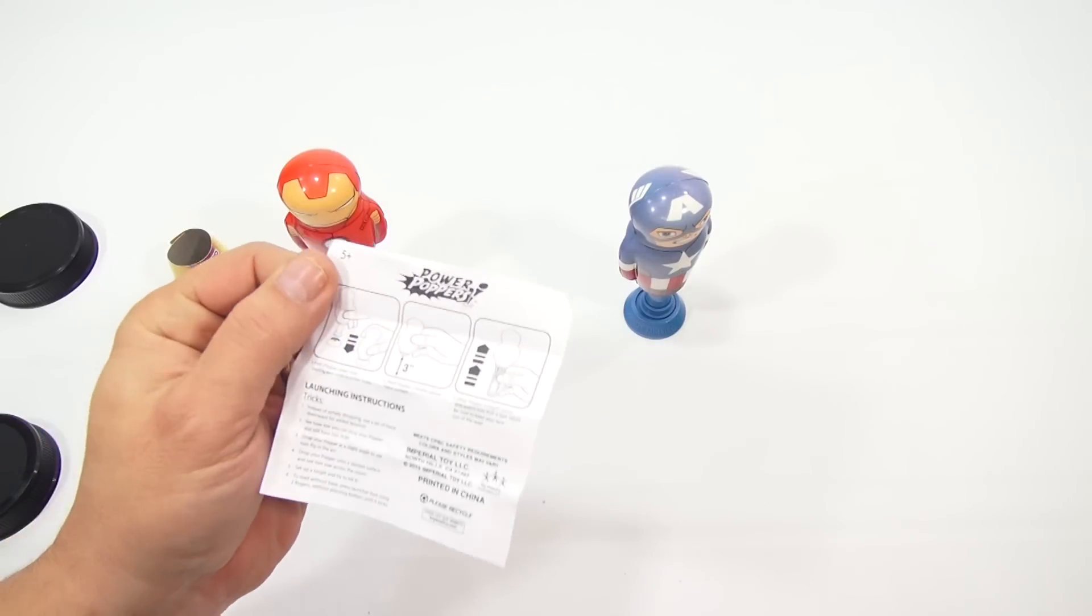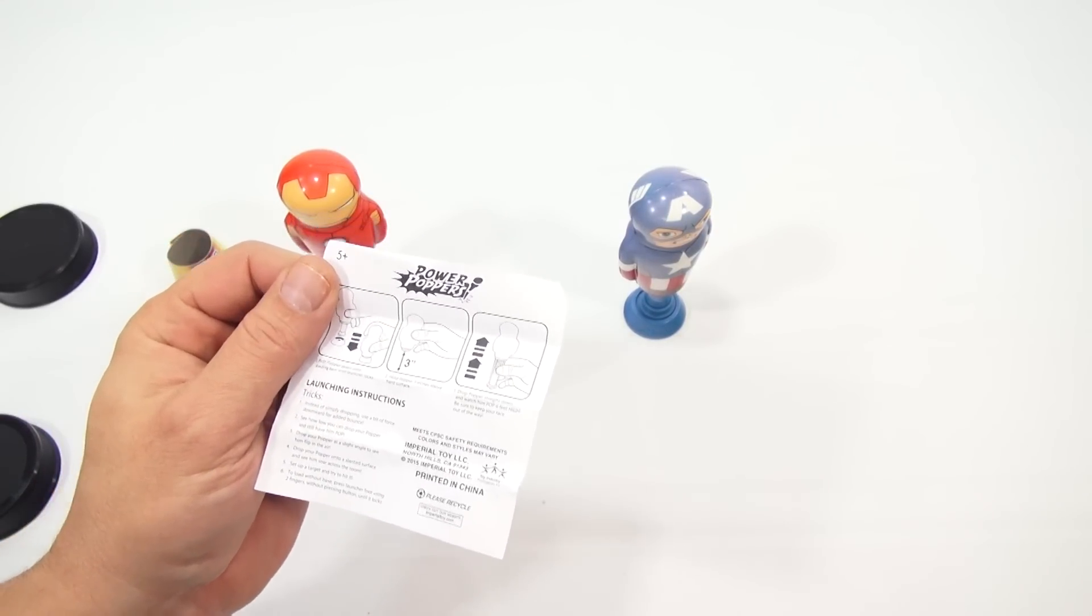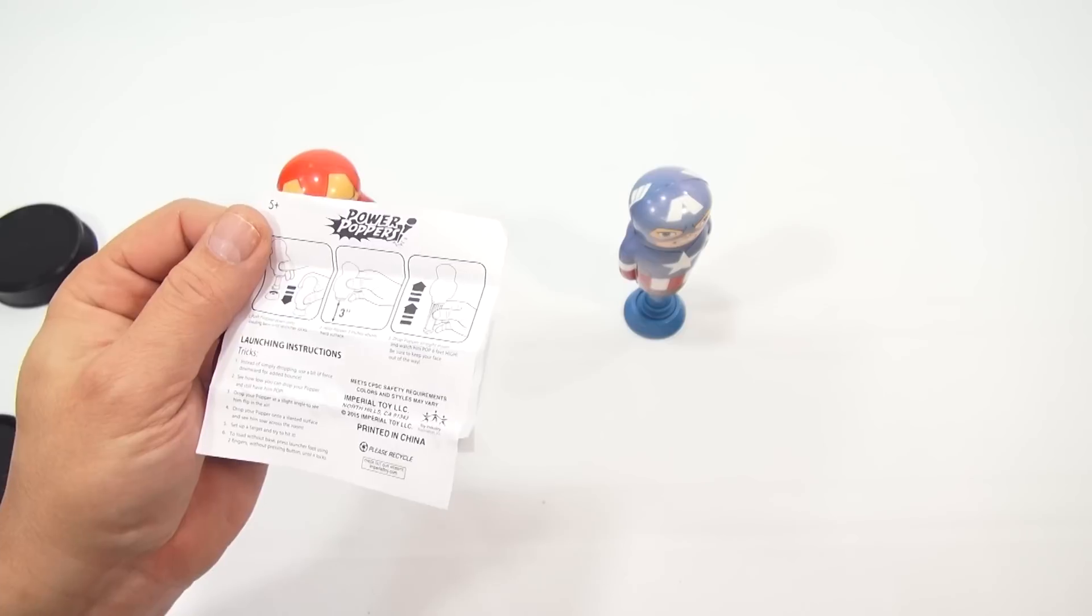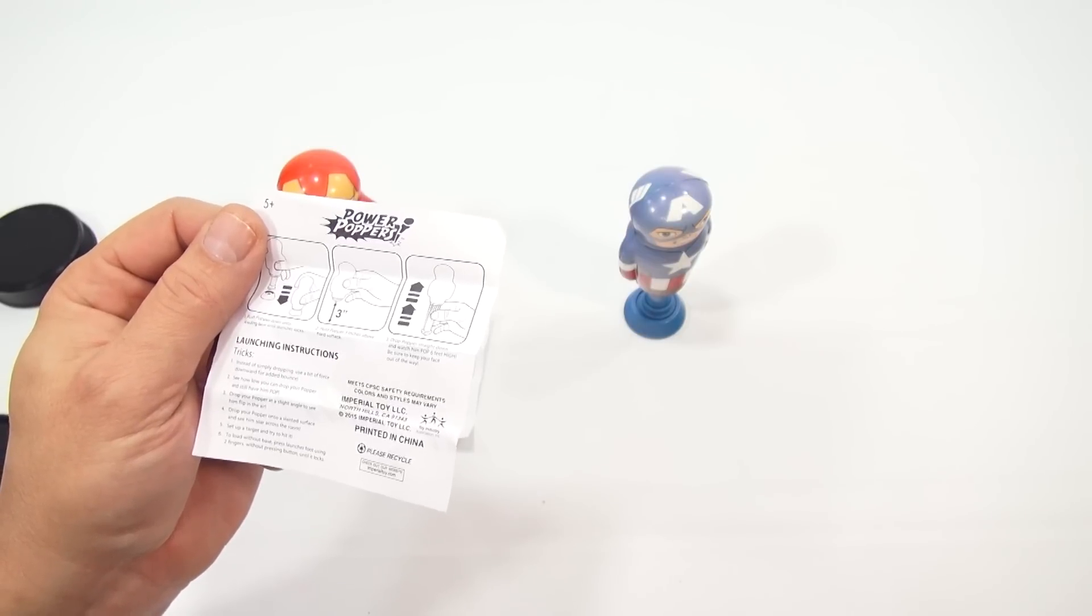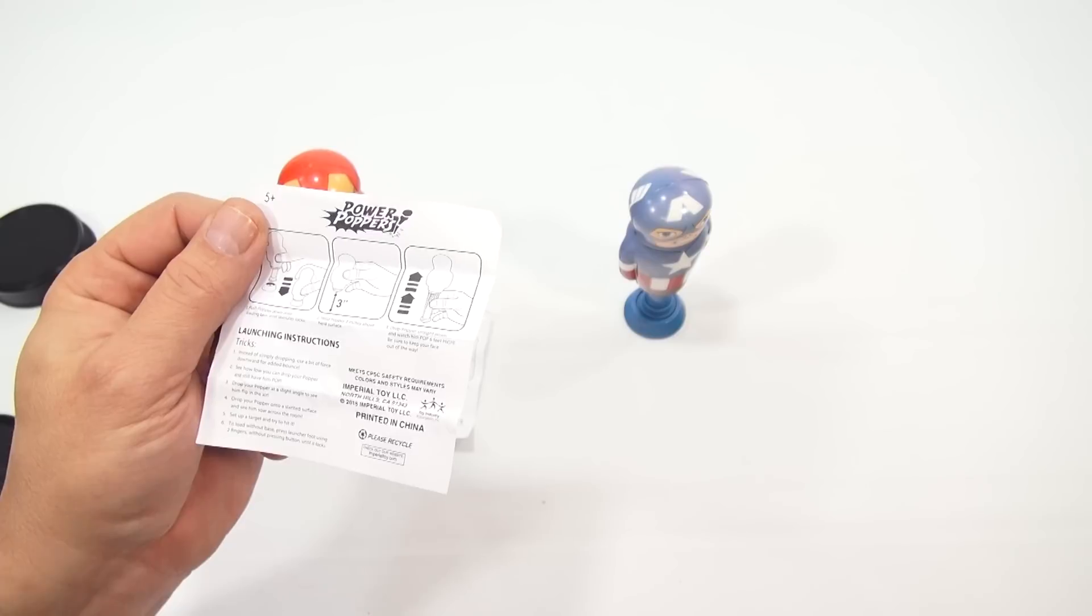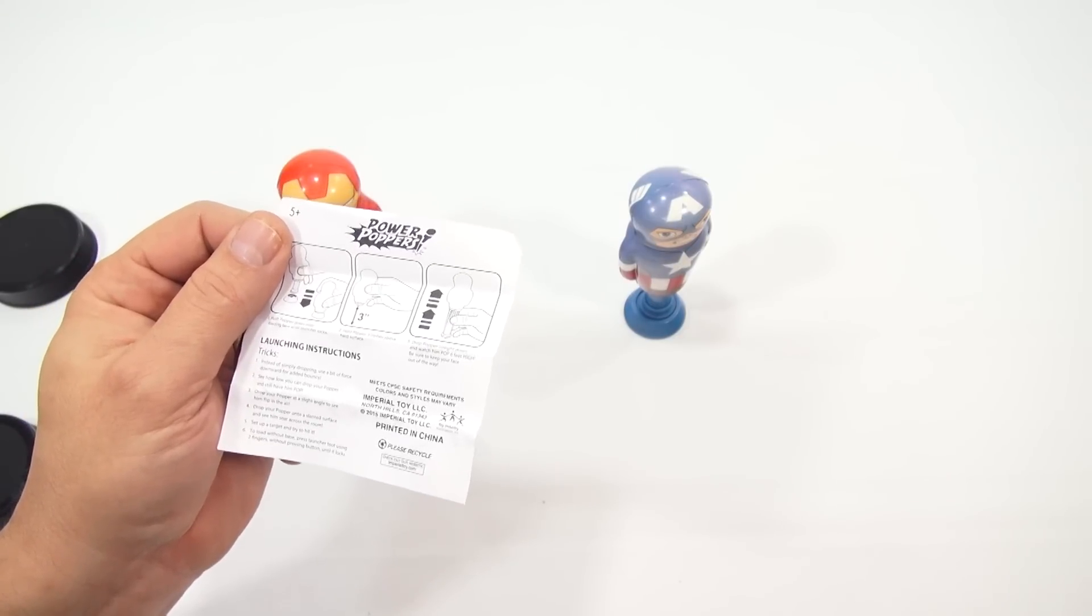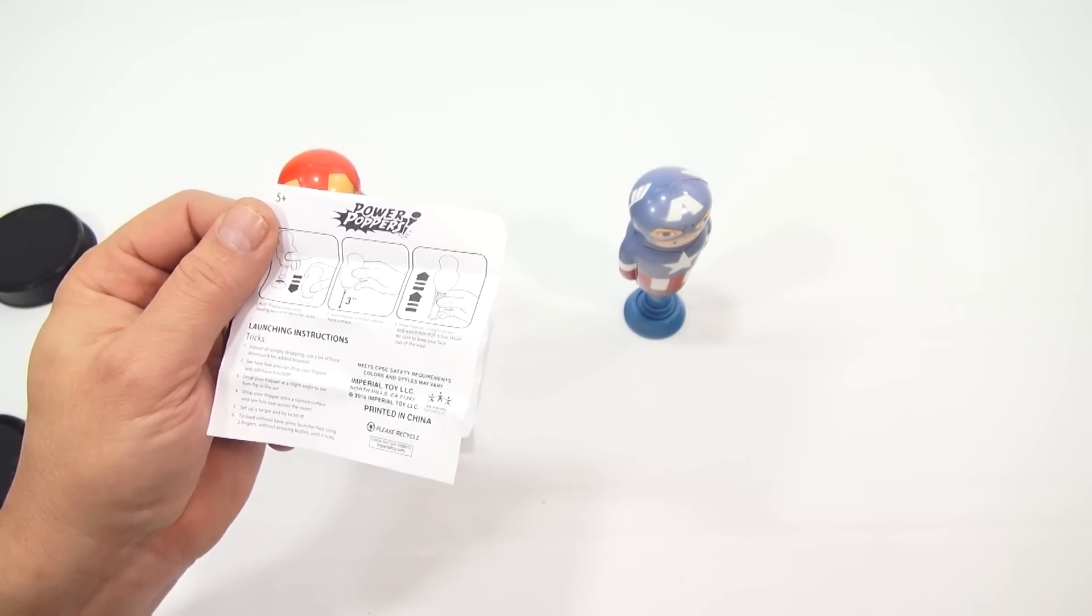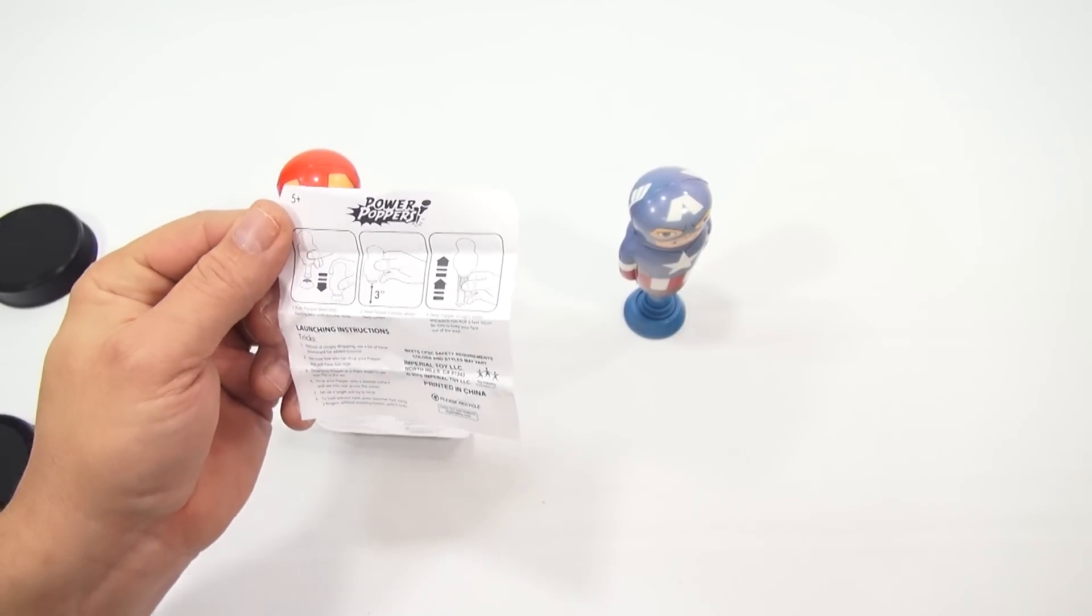Launching instructions. There's some tricks. Instead of simply dropping, use a bit of force down for added bonus so you can kind of speed up the process. See how low you can drop your popper and still have him pop. Drop your popper at a slight angle to see him flip in the air. Drop your popper onto a slanted surface and see him soar across the room. Set up a target and try to hit it. To load without base, press and launch using two fingers without pressing button until it locks. Okay. So there's some tricks there.